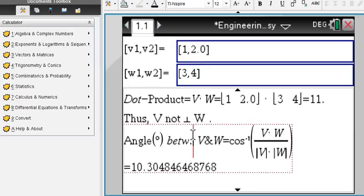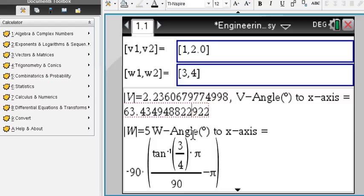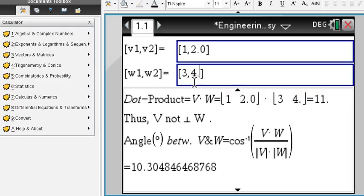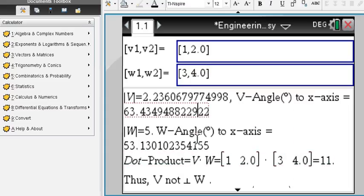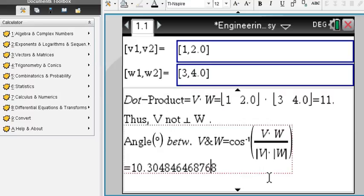Turn the 2 into 2.0, and you can see that the angle now is 63 degrees. Same for the w vector. Make any of the entries a decimal, and your final answer is going to be a decimal, 53 degrees. Here's your dot product, 11, and conclusions. V and w are not perpendicular because their dot product is not equal to 0, and the angle is 10.3 degrees.